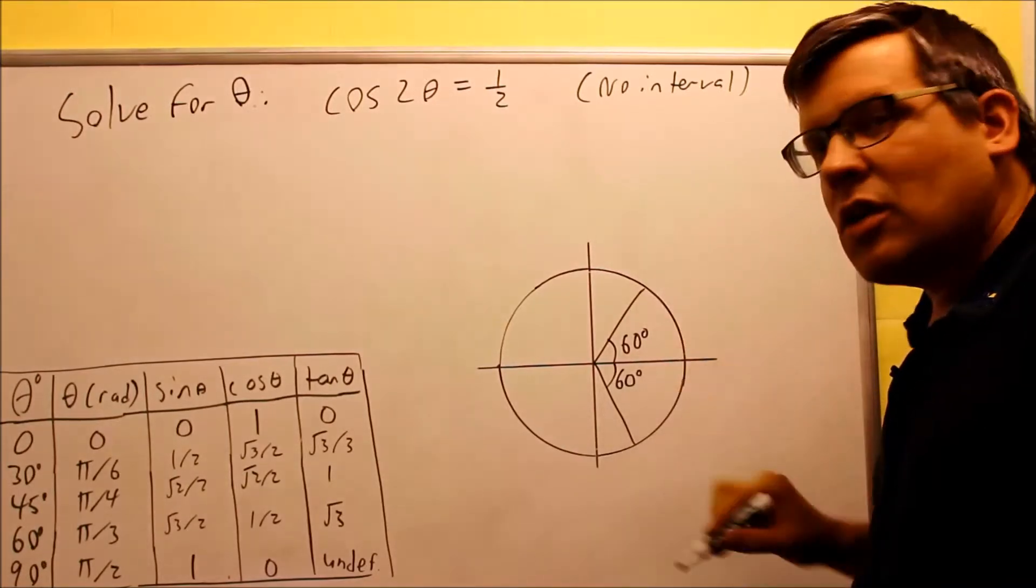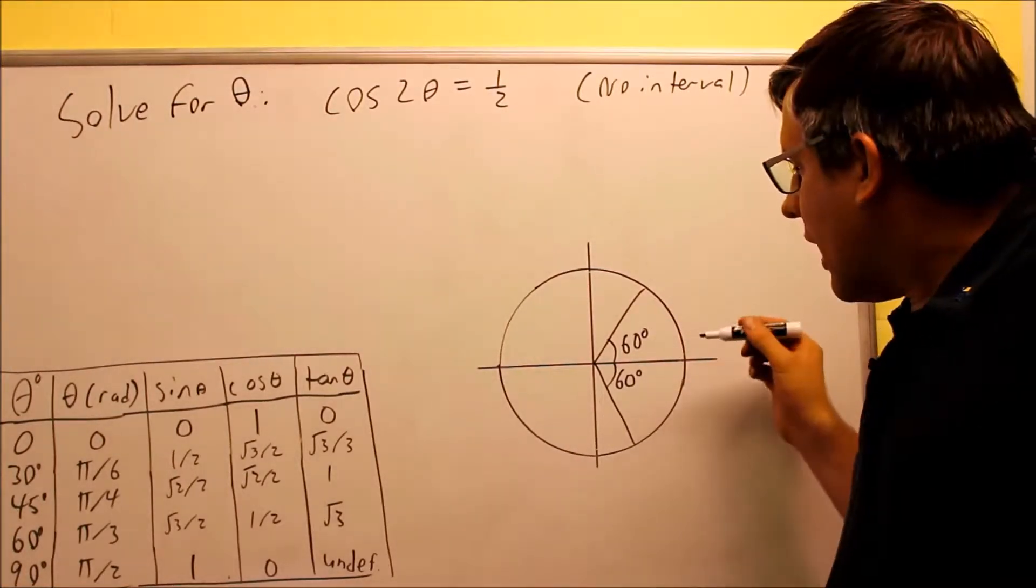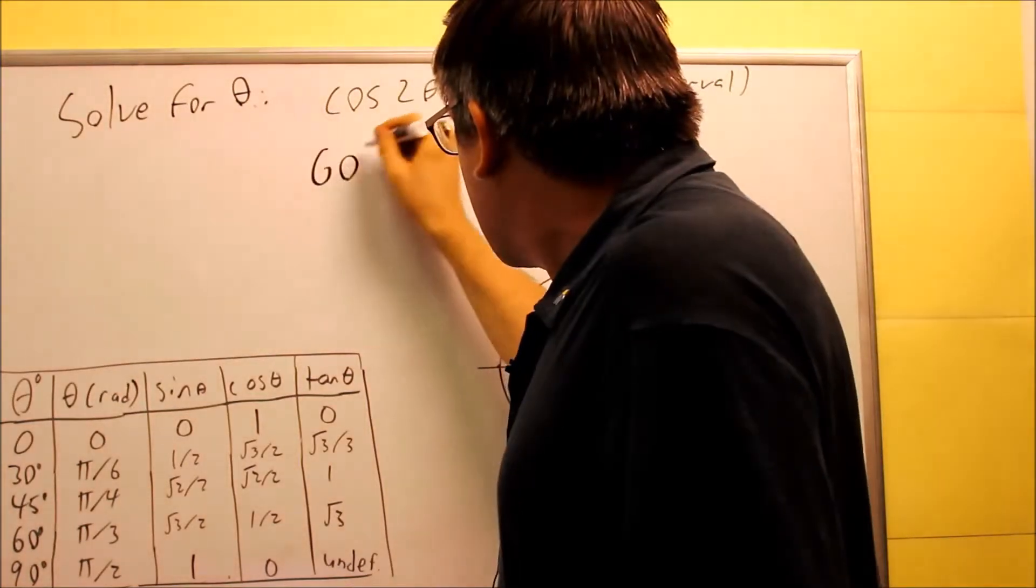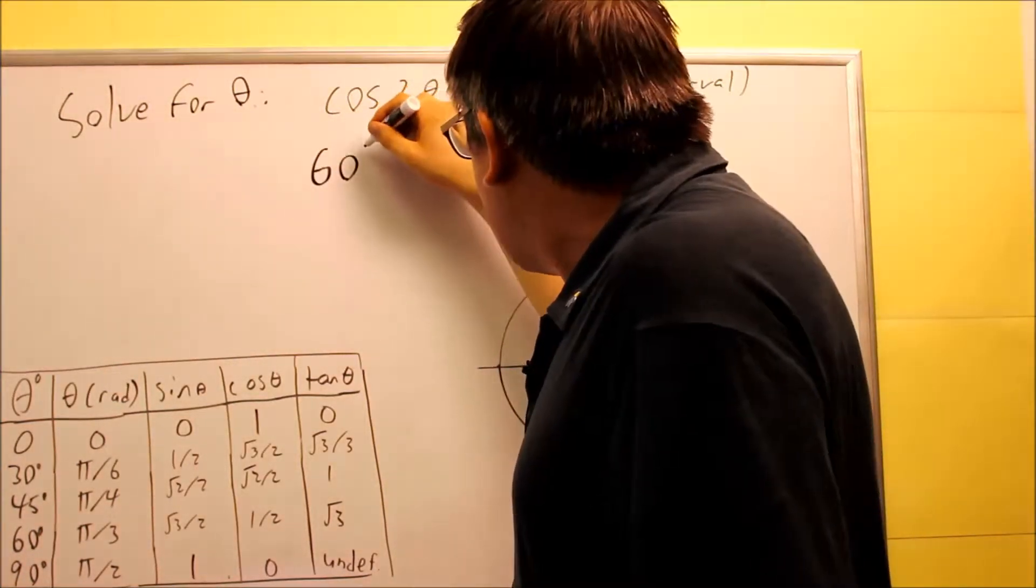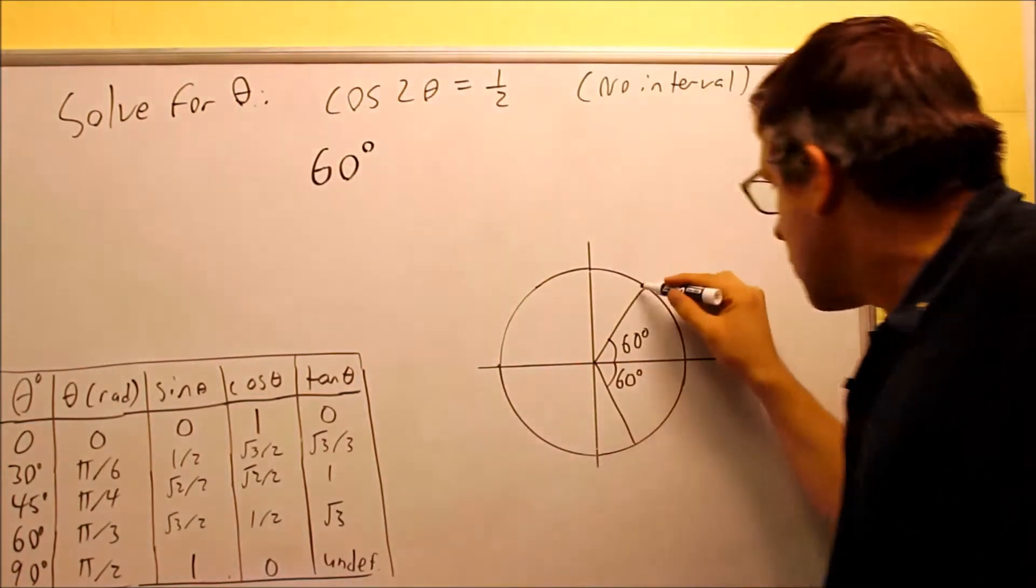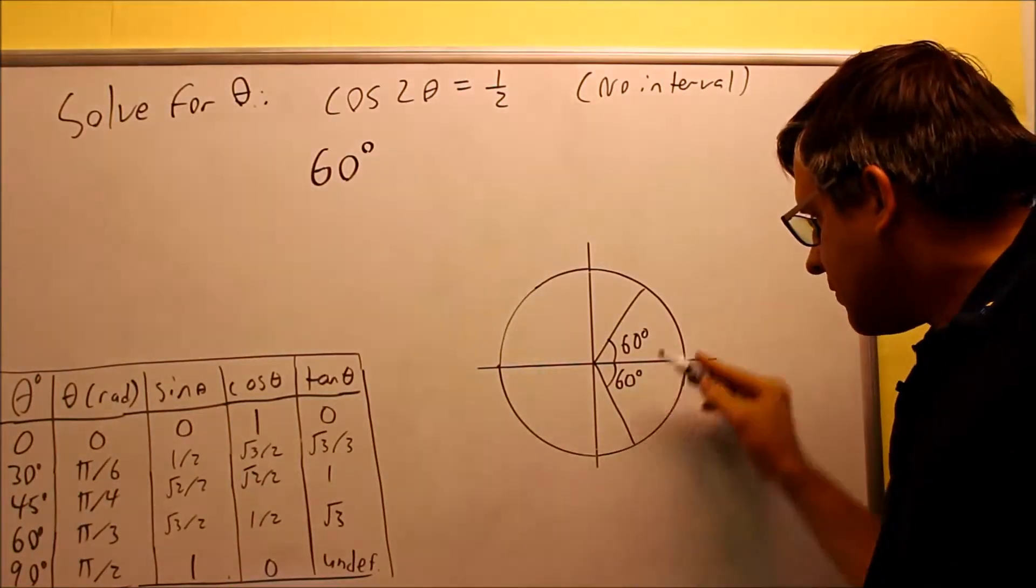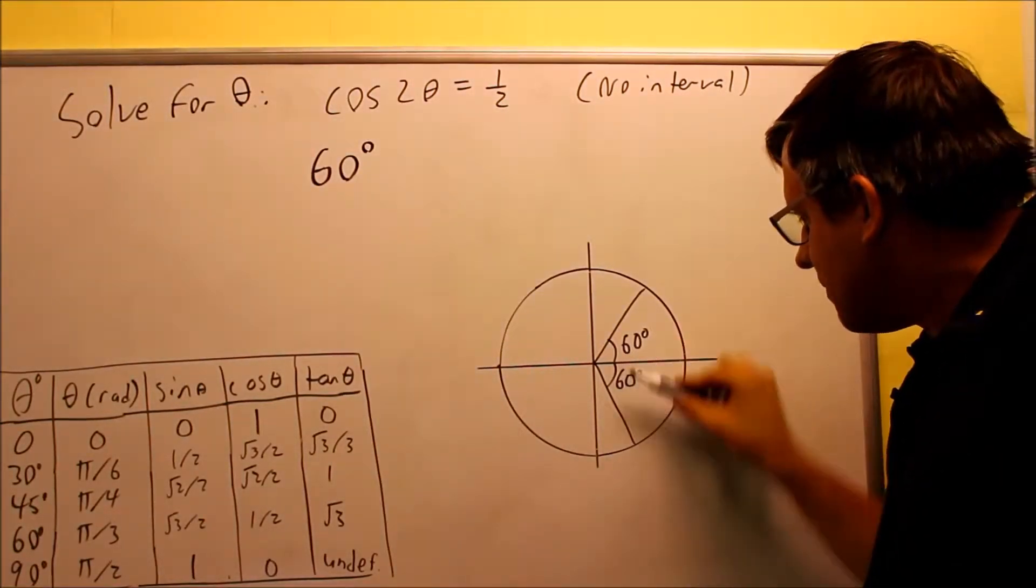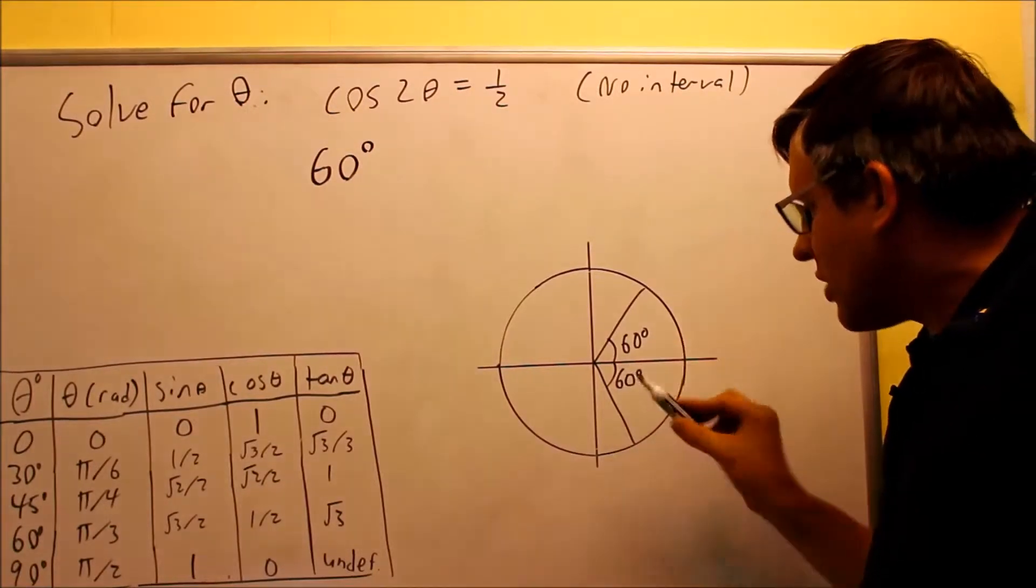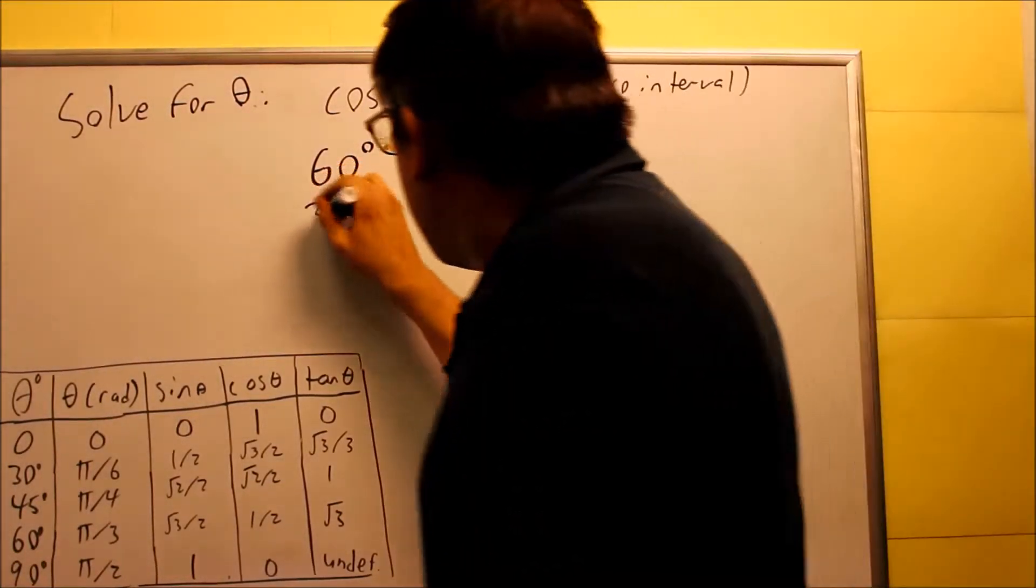Both of these would have the same x value. So I have two answers. I would have 60 degrees here as one of the answers, but then down below here, that's going to be 360 minus 60, so 360 minus 60 is going to be 300.